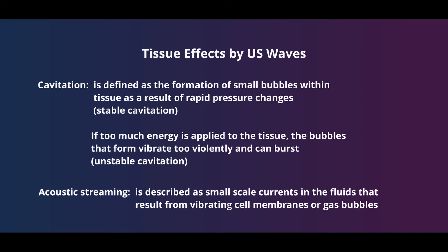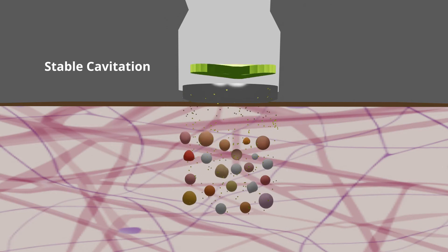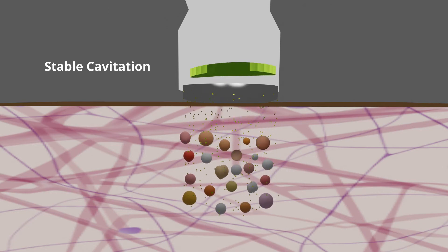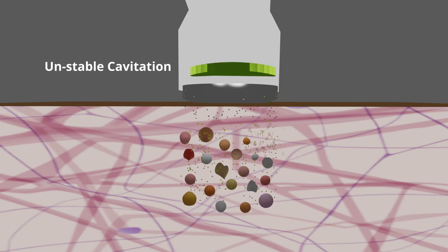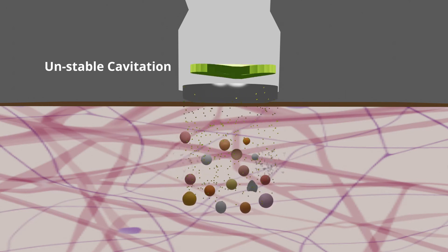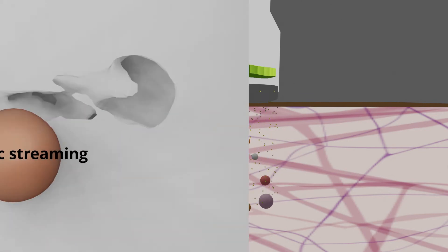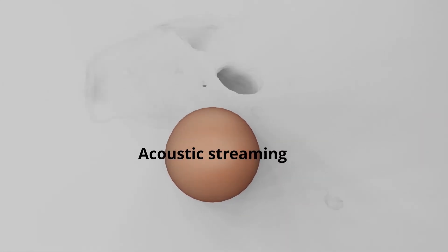Here's an example of cavitation. As energy is transferred to the patient, small gas bubbles form and vibrate, affecting the surrounding tissues. If too much energy is applied, those gas bubbles can become violent and burst — this is what we call unstable cavitation. The bursting of those bubbles can cause tissue damage. Here we have an example of acoustic streaming surrounding one of the vibrating gas bubbles. Again, the small currents that are created have an effect on the surrounding tissues.